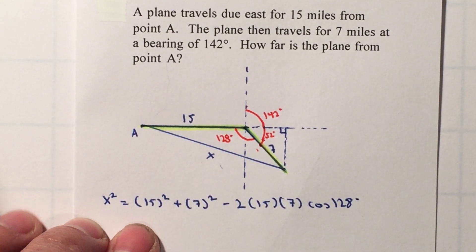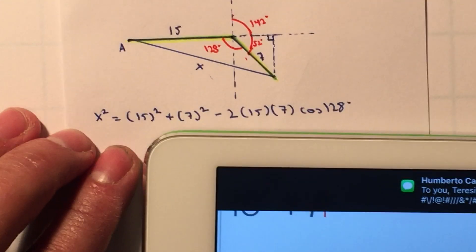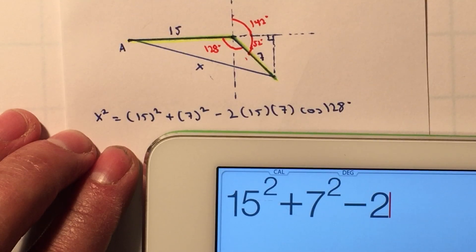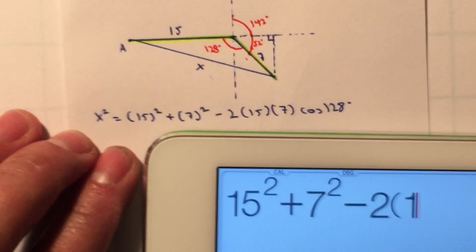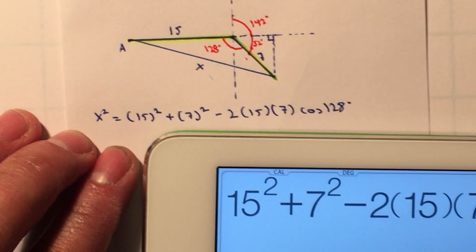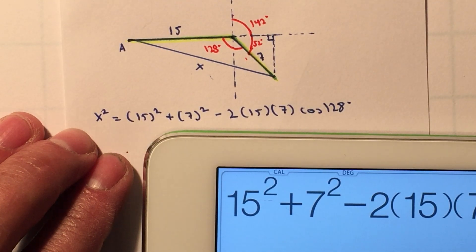In this case, I'm just going to use my padding here: 15² plus 7² minus 2 times 15 times 7, and multiply by the cosine. Make sure you have it on degrees. In this case I do have it on degrees. Multiply by the cosine of 128°.